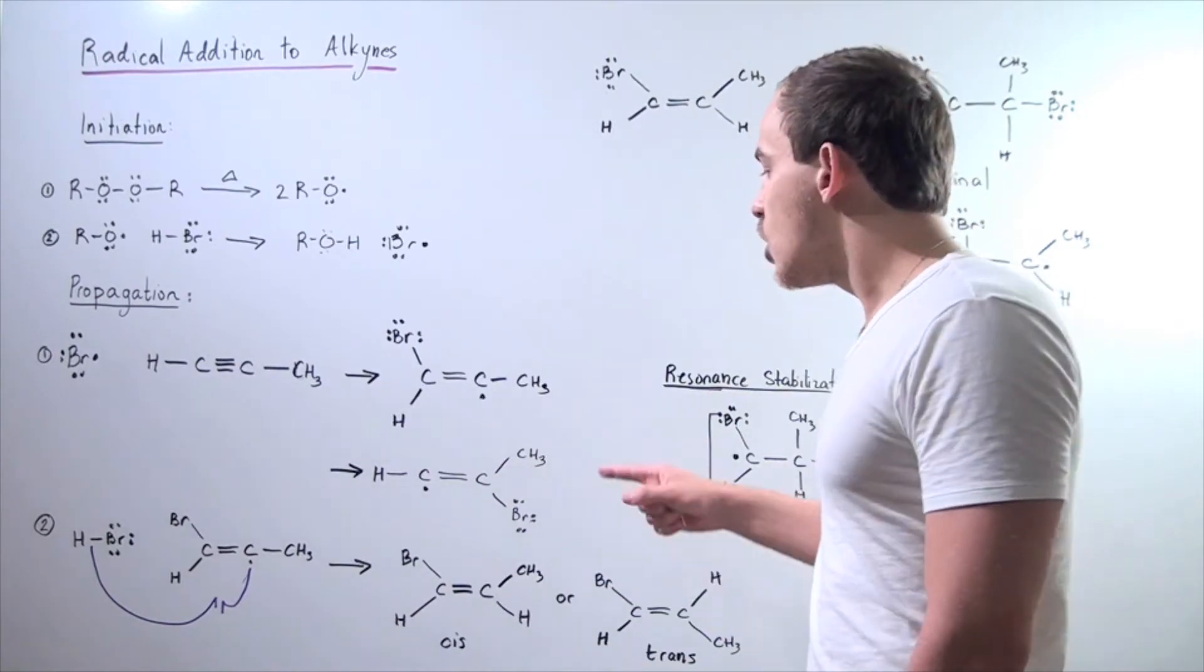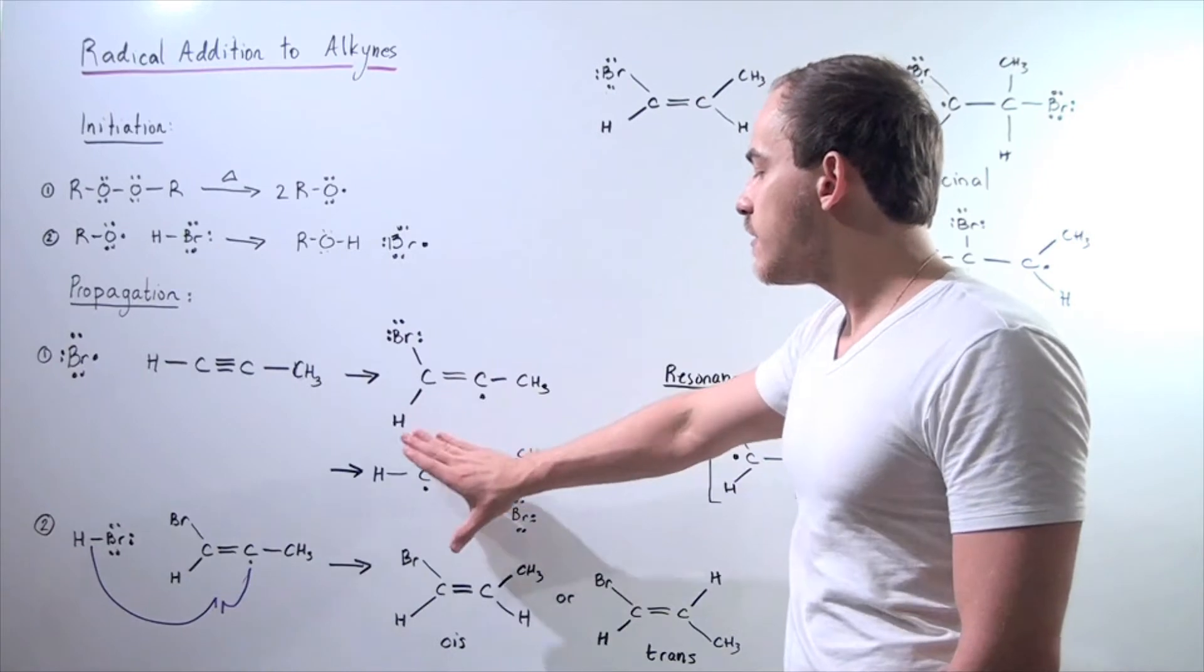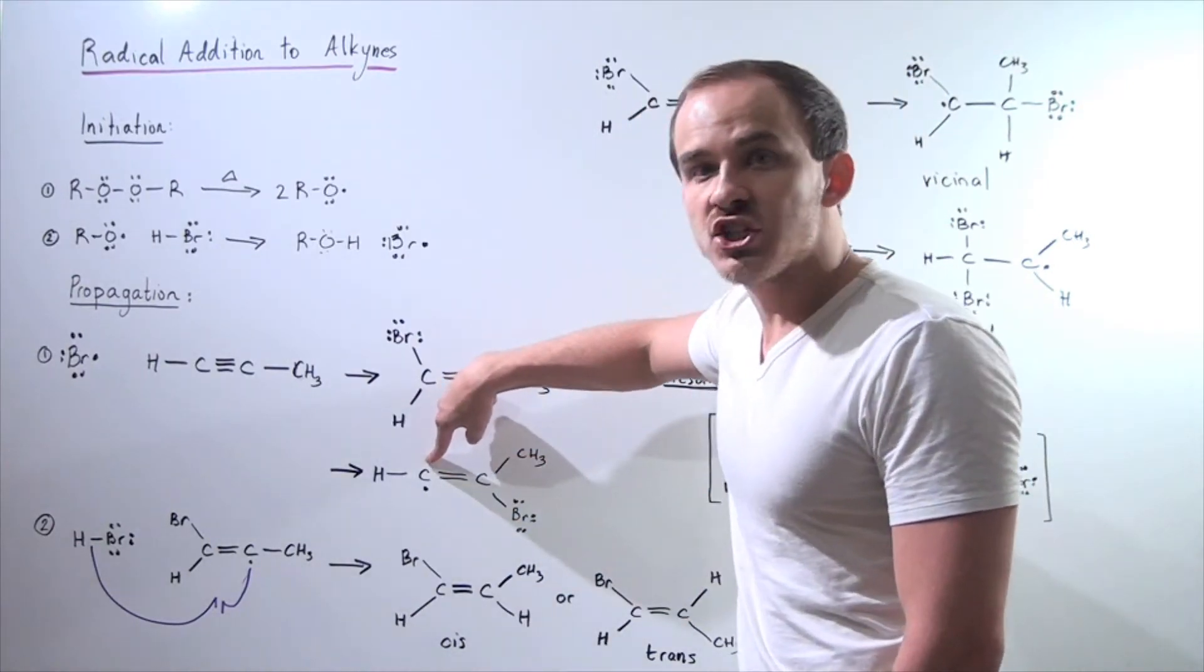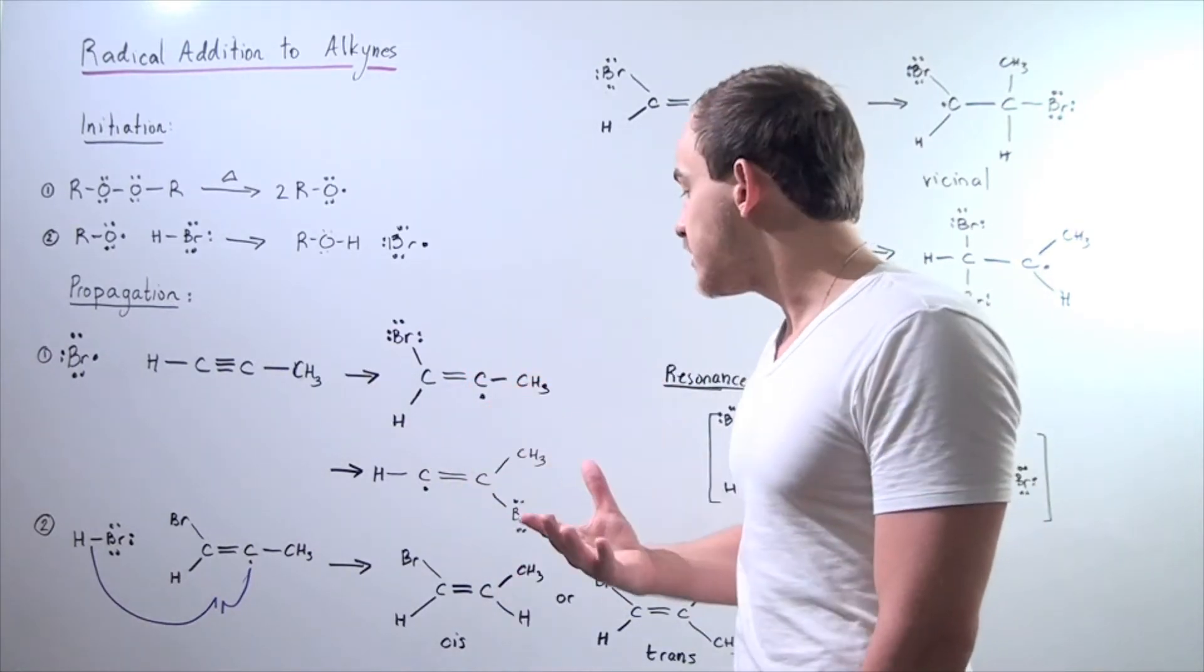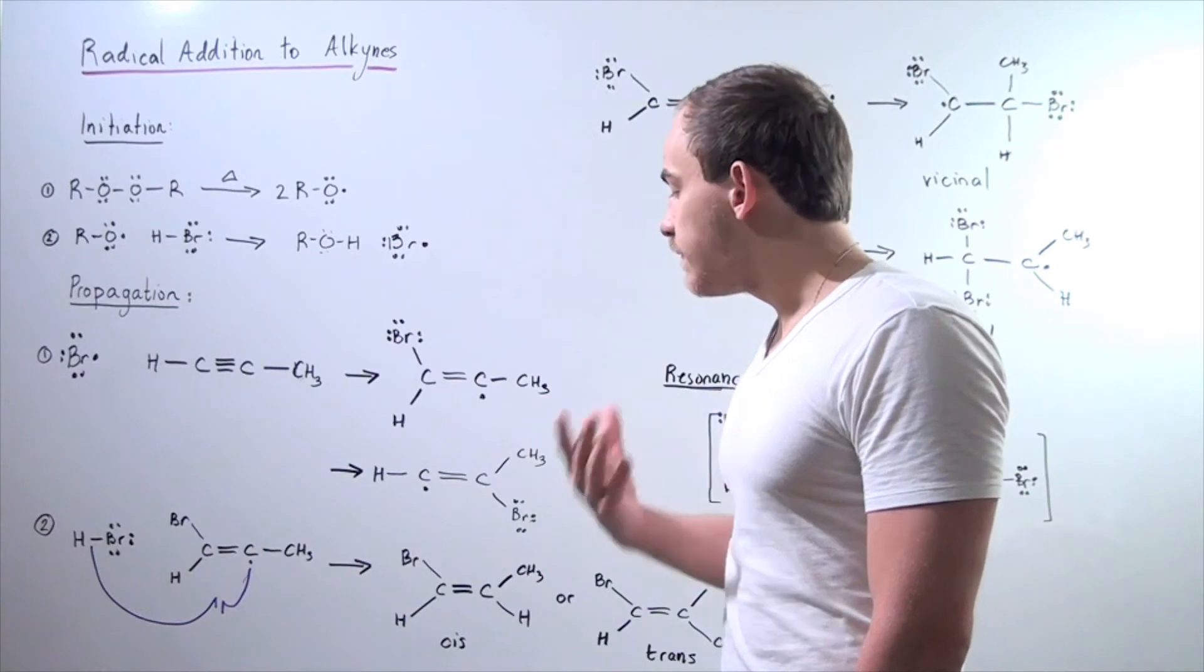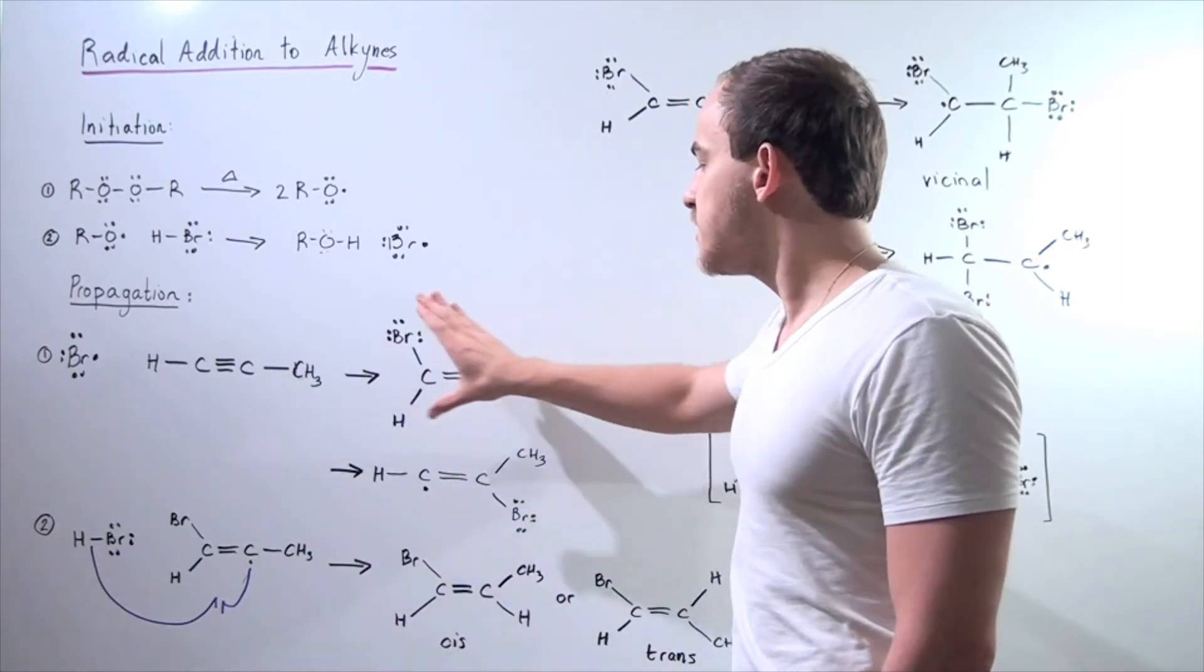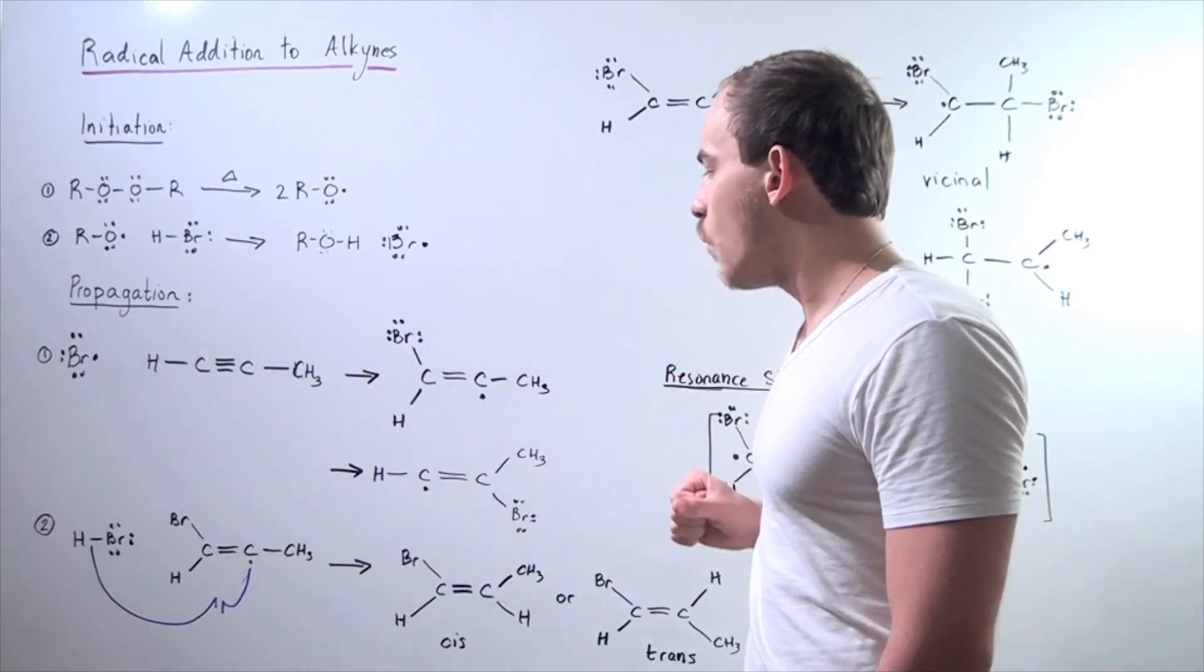On the other hand, we don't have that same hyperconjugation effect on this intermediate because there are no adjacent carbon H-bonds next to this carbon. So there is no relative stabilizing effect. So this is the more stable intermediate. In fact, this is the one that will form.